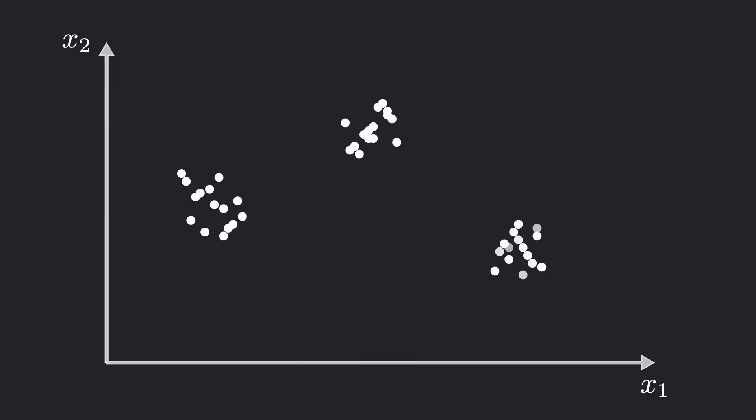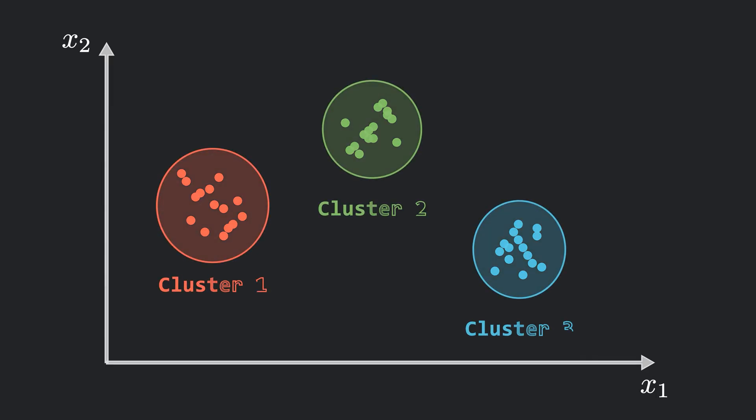Before we dive into k-means, it's important to first understand what clusters actually are. Clusters are simply groups of data points that share similar attributes. For example, in this dataset, we can clearly see three distinct groups of points that are more similar to each other within the group than to points in the other groups. So we say that there are three clusters here. A cluster is a collection of data points that are more alike to each other than to the rest.